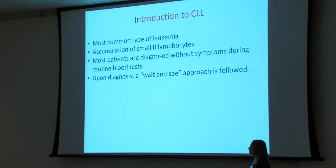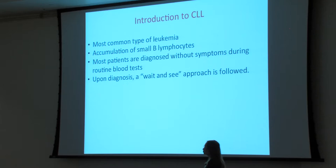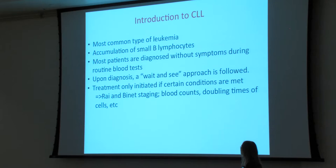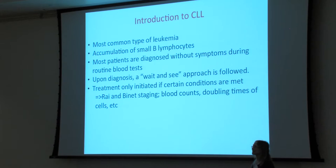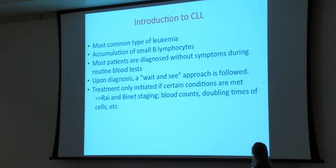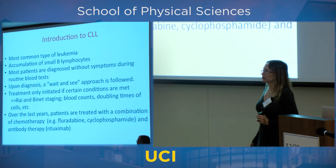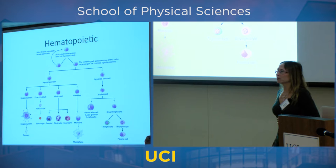Up until a couple of years ago, the approach to treating this disease was 'wait and see.' Why? Because with chemotherapy, treating early or waiting made no difference in survival and no difference in symptoms. There are different ways to classify this disease — different in the US and Europe — looking at blood counts, doubling time, and so on to decide when it's time to treat.